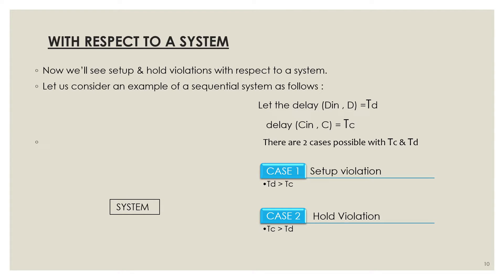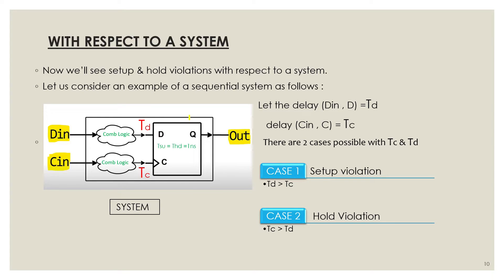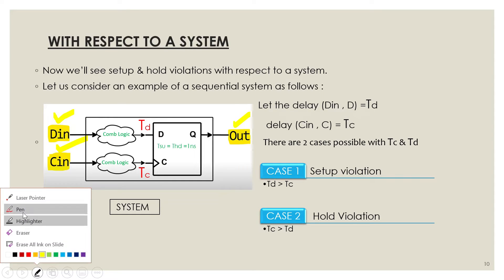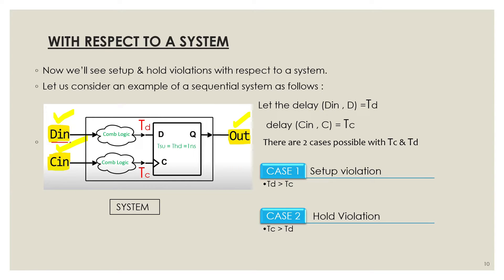So, till now we have understood setup and hold time violations with respect to a flip-flop. Now we will see this with respect to a system. Let us consider an example of a sequential system consisting of a D flip-flop and some combinational logic, with inputs D-in and C-in and an output. Let the delay between D-in and the D-input of the flip-flop be T_D, and the delay between C-in and the C-input be T_C.